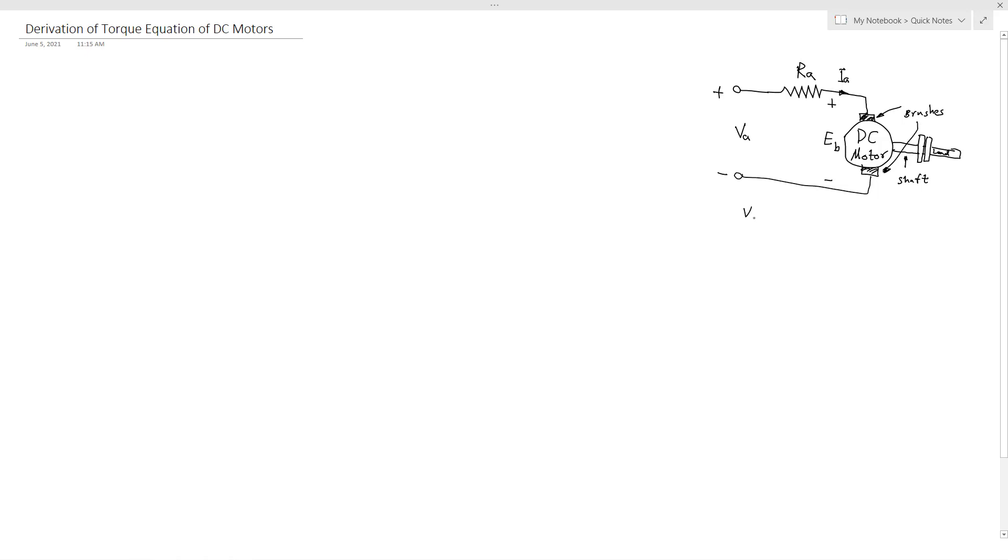So we can say here VA is the supply voltage. EB is back EMF.